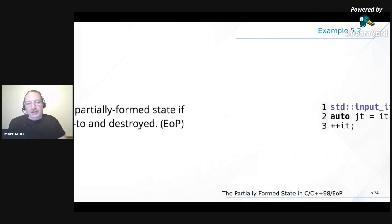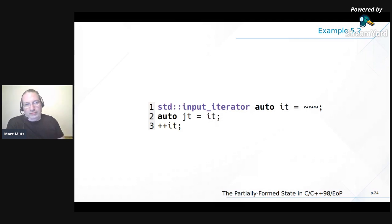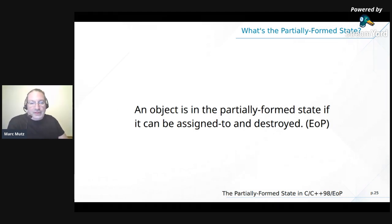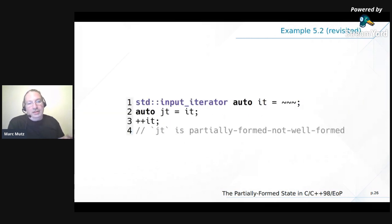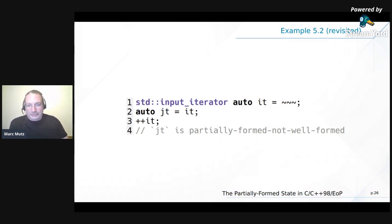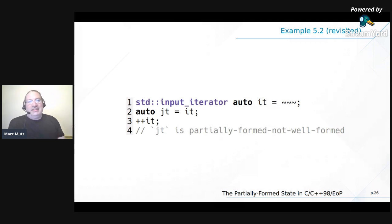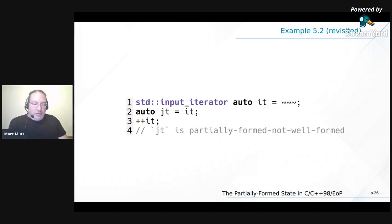Copies of an input iterator that have not been advanced are magically Partially Formed — not well-formed. One important thing: while the value does not change between partially formed and well-formed states, these two states don't coincide in time — there's always a time where it's valid and then a time where it's not valid. We'll later talk about what the standard calls 'valid but unspecified' state.